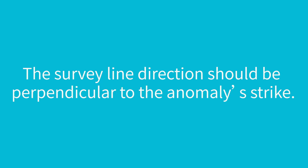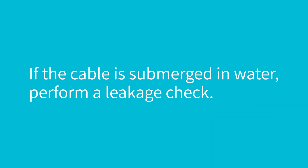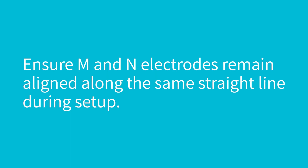The survey line direction should be perpendicular to the anomaly strike. Keep the cable as far as possible from high-voltage power lines and telephone lines; if unavoidable, align the survey line parallel to them. If the cable is submerged in water, perform a leakage check. Ensure M and N electrodes remain aligned along the same straight line during setup.